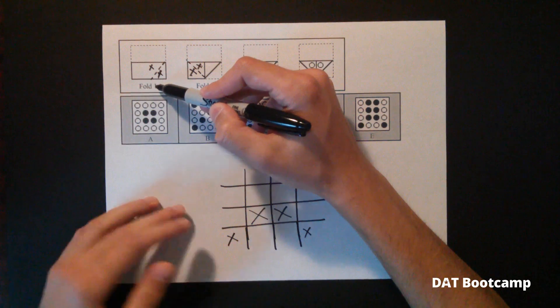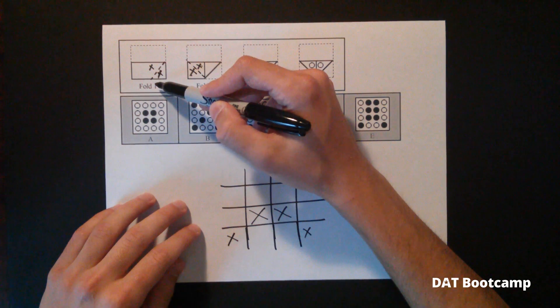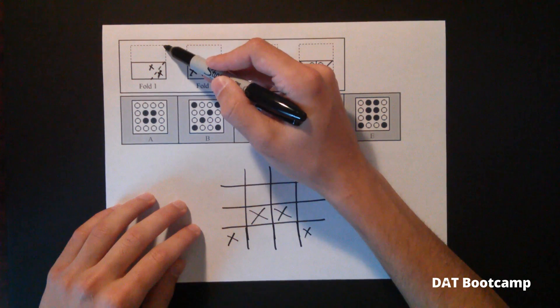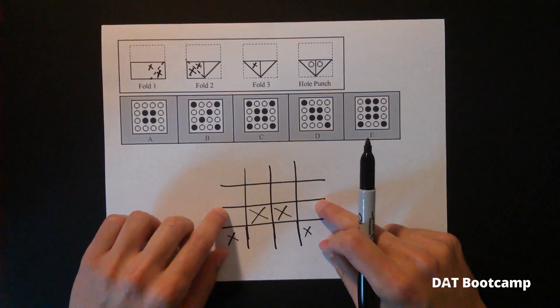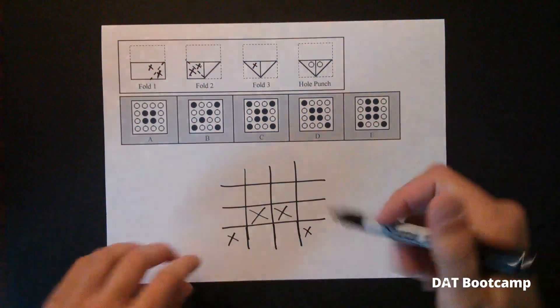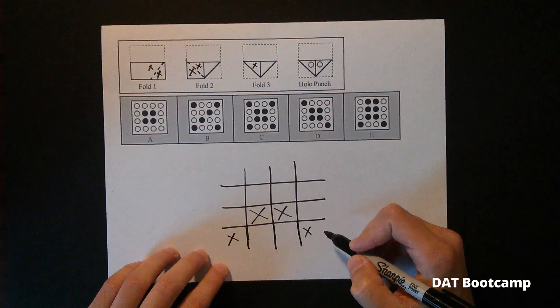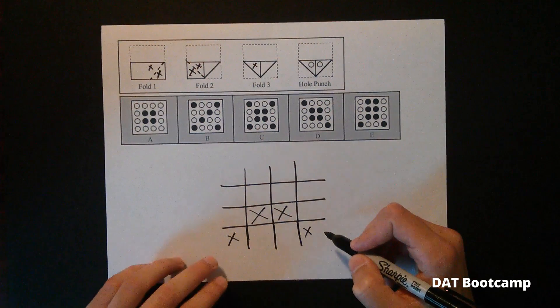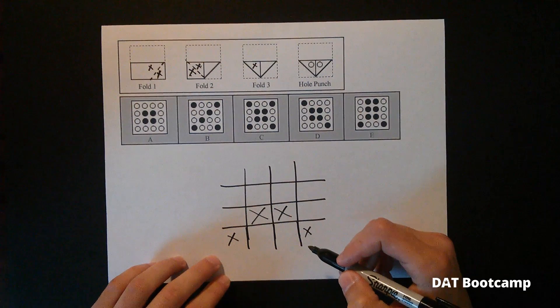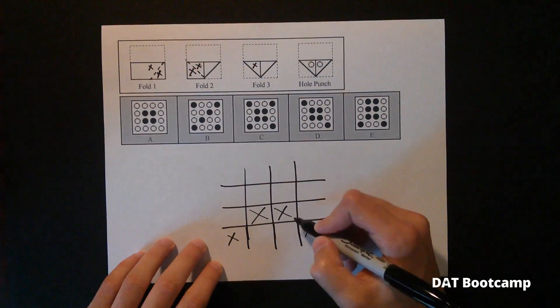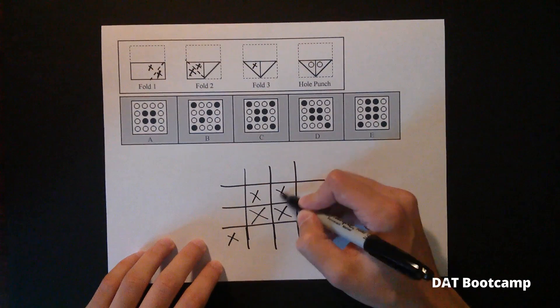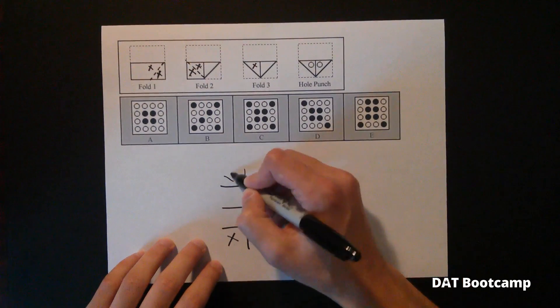Now from fold one to fold zero, or the original paper, we see that the top half was folded down on the bottom half. So all this is essentially just duplicated over to the other side. There's something called the line of symmetry method, which I'm going to link to in this video. And I think it's a really great strategy for the hole punching section. But if you unfold this, you would see that there would be a hole here, a hole here, a hole here, and a hole here.